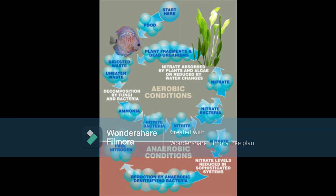To sum it all up: aerobic bacteria require oxygen, while anaerobic bacteria must live in environments with little to no oxygen. Both are responsible for the nitrification and denitrification of our aquariums. Aerobic nitrifying bacteria convert ammonia into nitrate, while anaerobic bacteria convert nitrate into nitrogen gas.